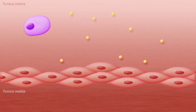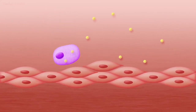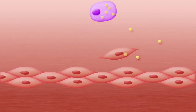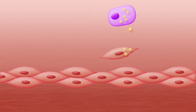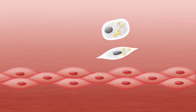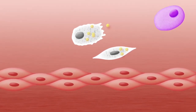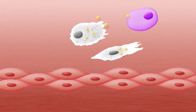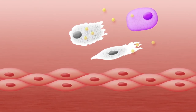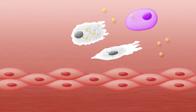Macrophages in the tunica intima start to engulf modified LDL particles. Ultimately, this leads to the production of a cell called a foam cell. A foam cell is saturated with LDL particles, and the excessive amount of lipid in the cell gives the cytoplasm a foamy appearance. Foam cells ultimately die and release their contents, which are then quickly engulfed by other nearby white blood cells. Note that the animation also shows smooth muscle cells engulfing LDL cholesterol.